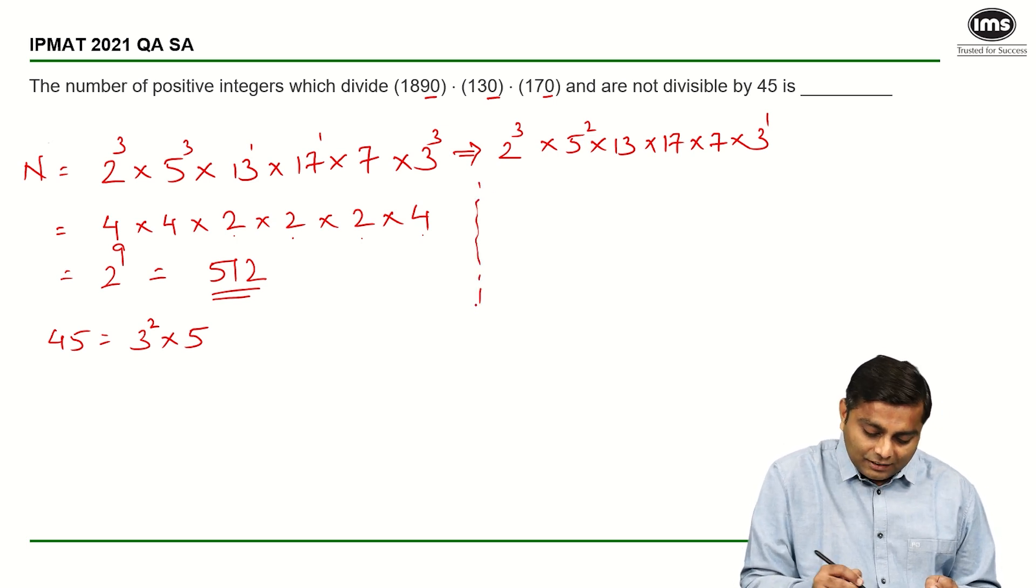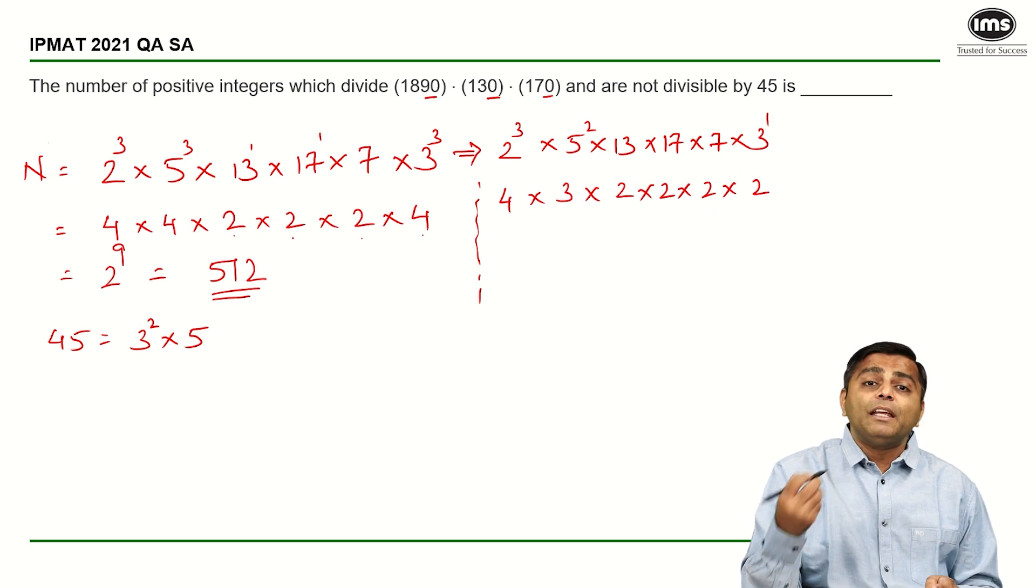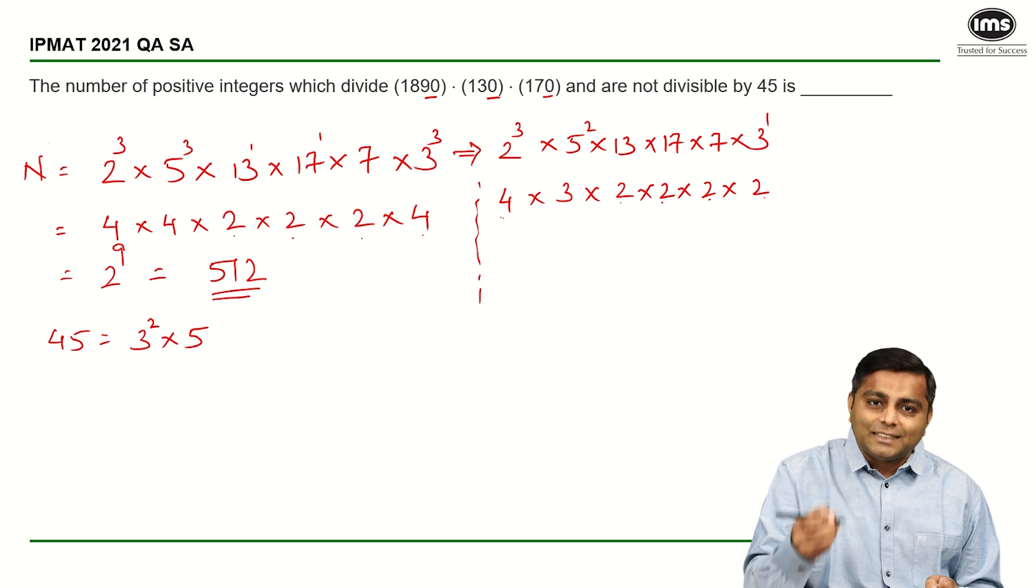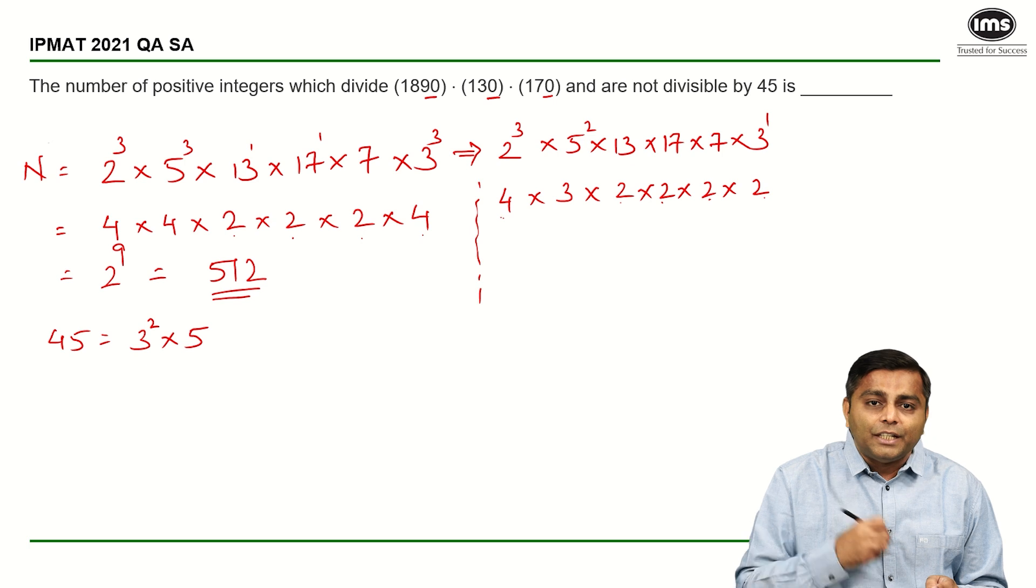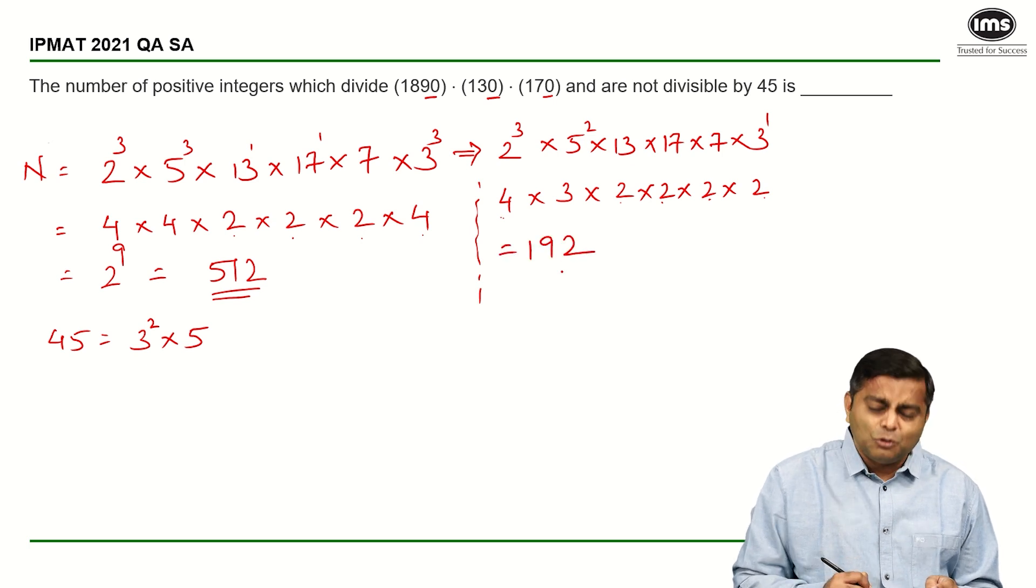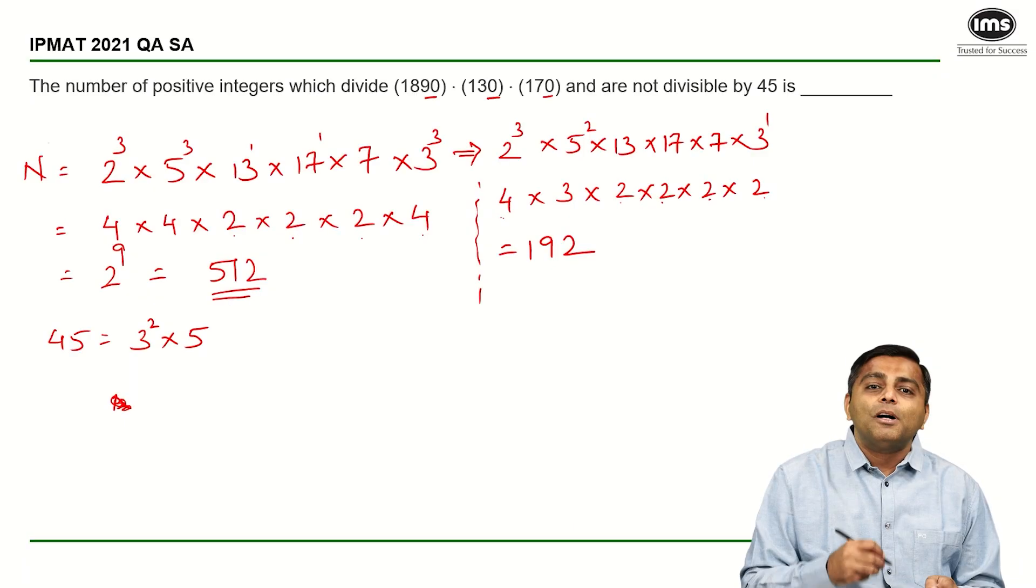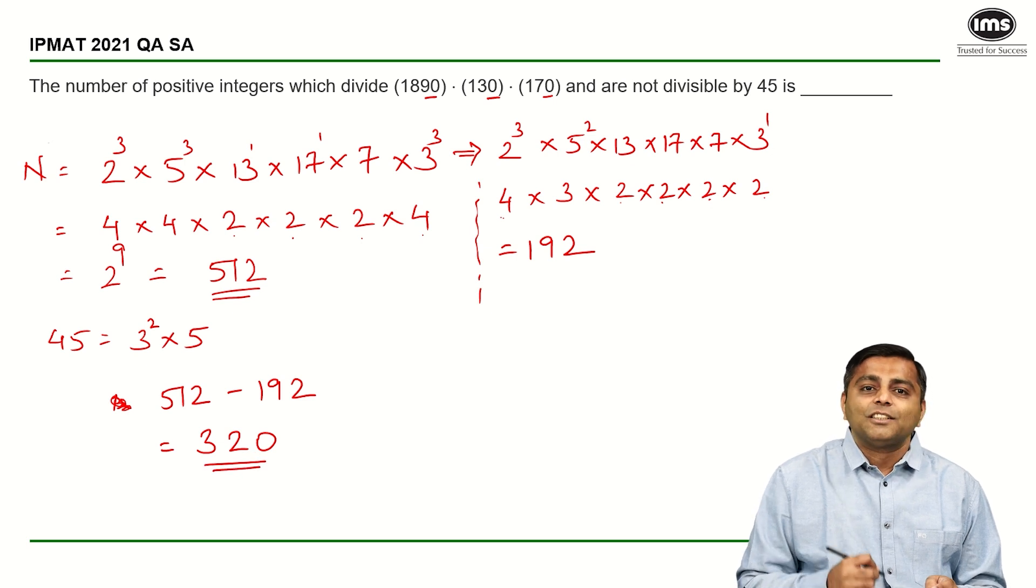If you have to find the factors of this guy, it is going to be 4 into 3 into 2, 2, 2 and a 2. So how many powers of 2 do we have? 1, 2, 3, 4 and 5, 6. So it is 2 raised to 6 which is 64 and 64 into 3. 64 into 3 is going to be 192. So we have 192 factors which are multiples of 45 and hence numbers which are not divisible by 45 are going to be 512 minus 192. So the answer is 320. So that is your answer 320.